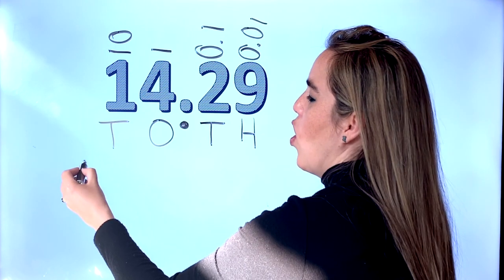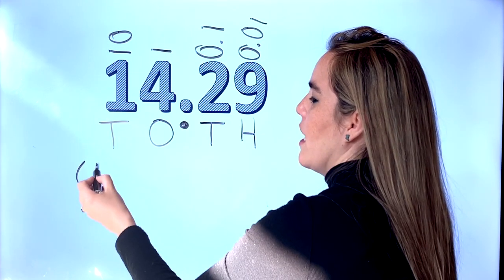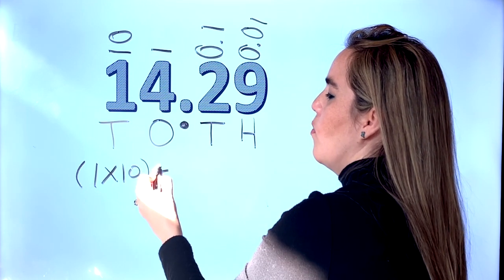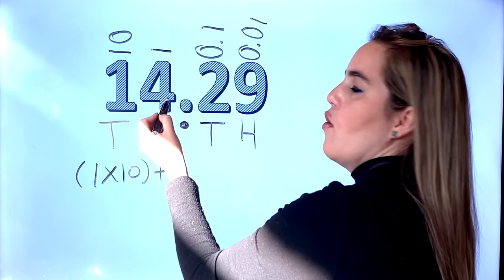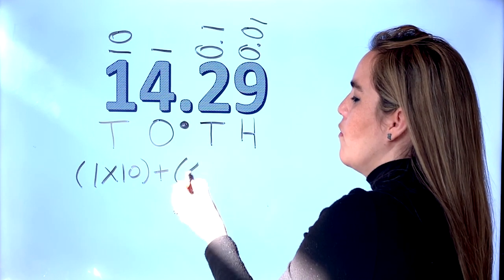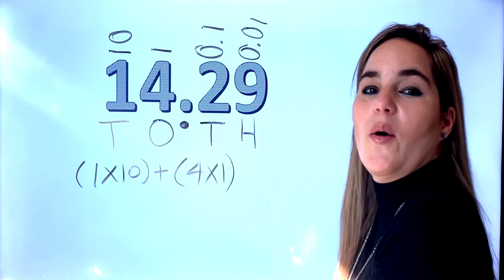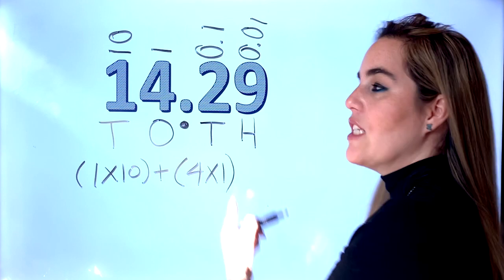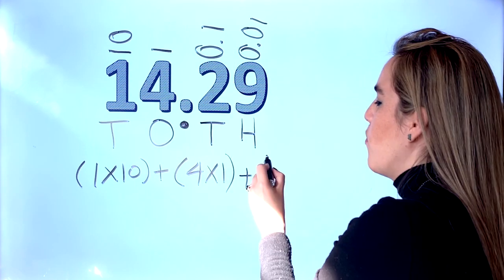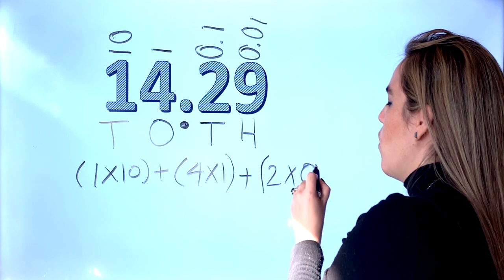Now let's do the expanded notation: open parenthesis, one group of ten — ten — plus four groups of one — four times one — plus two groups of one-tenth — two times zero-point-one — plus nine groups of one-hundredth.